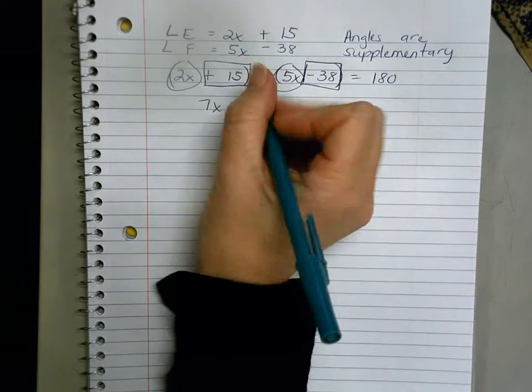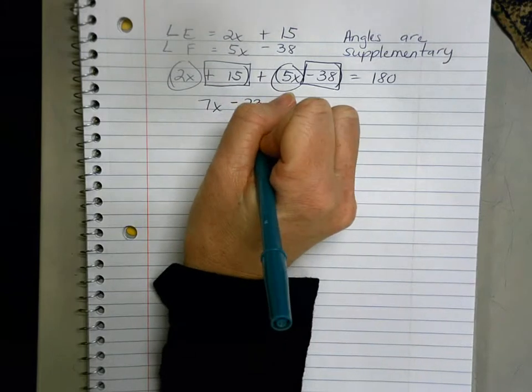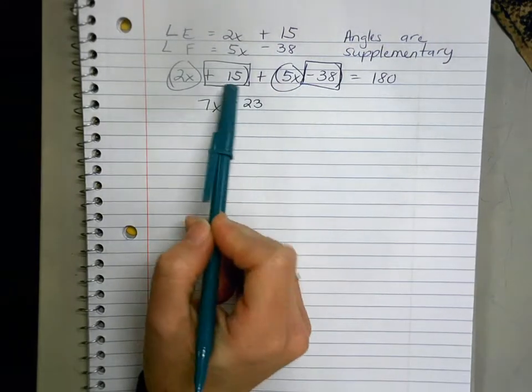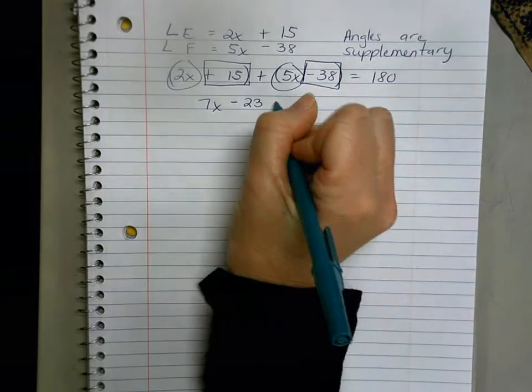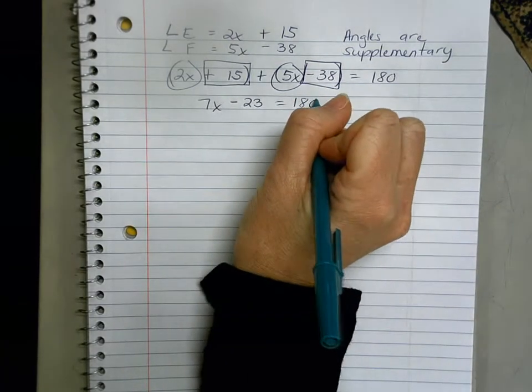And that equals 180. And then this is the first place where students might have a little bit of a struggle. And again, equations is our next unit, so these are pretty basic ones. If you're having trouble, more help is on the way.